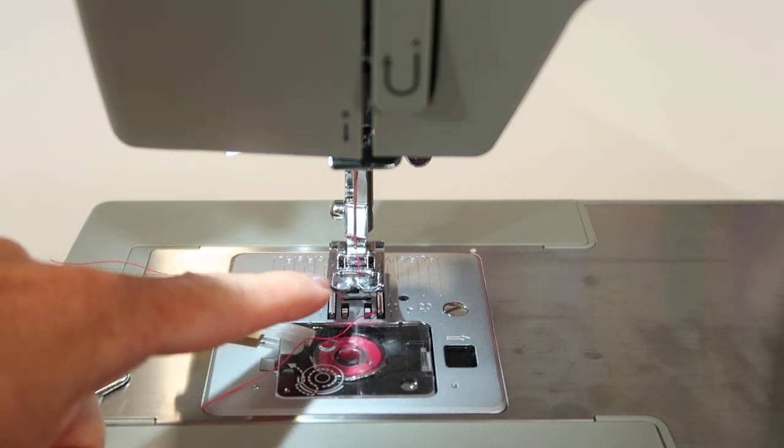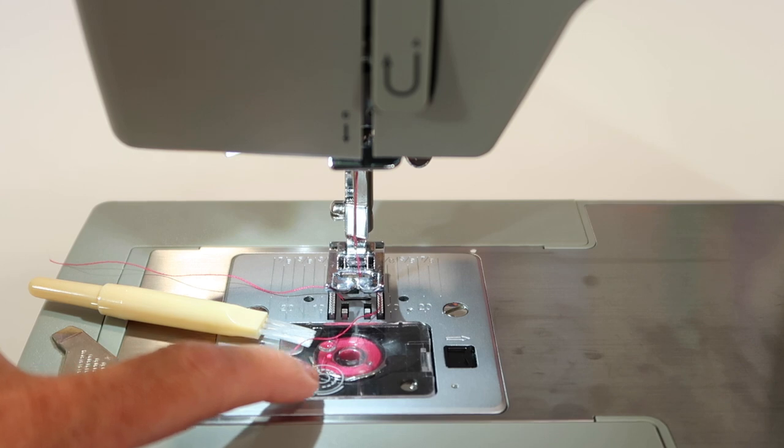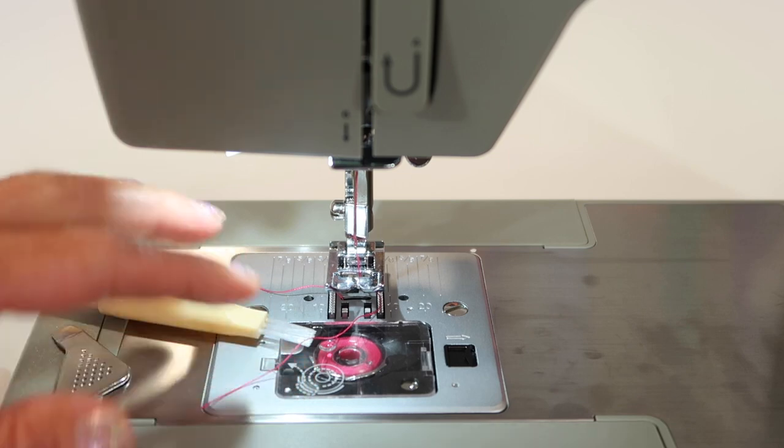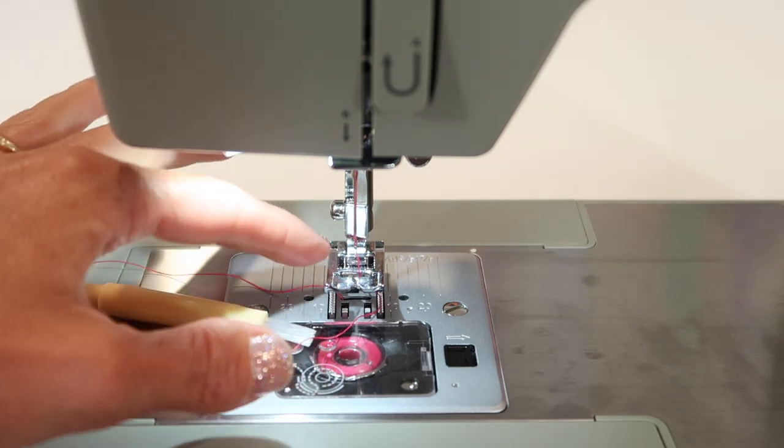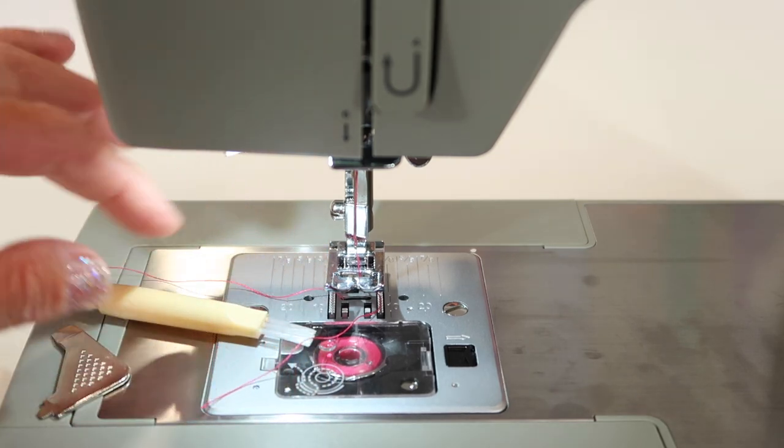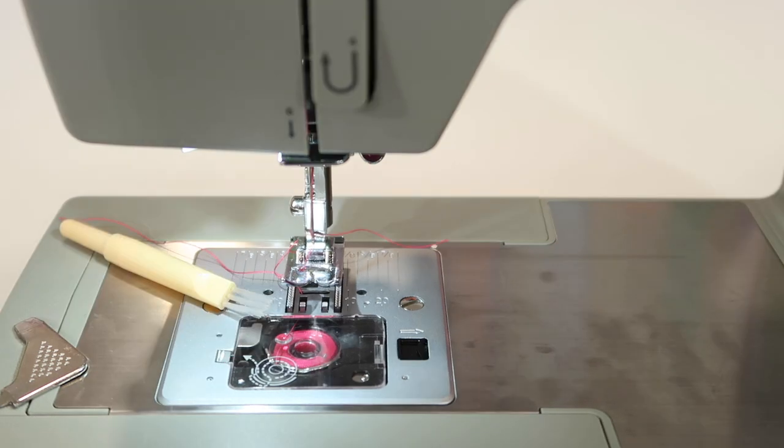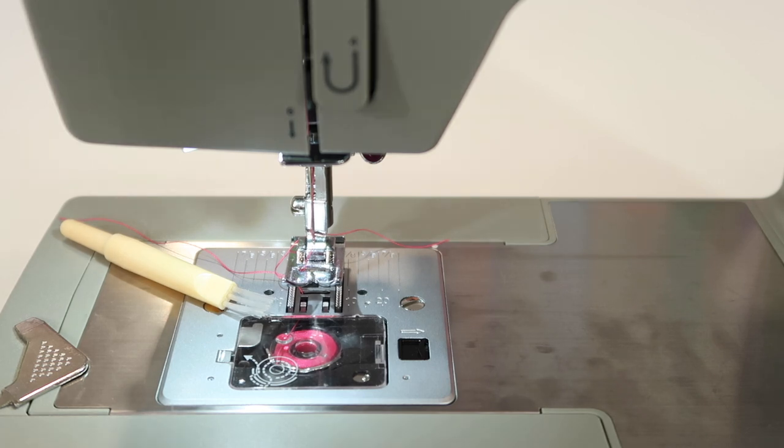If you're noticing some skipped stitches, a machine that's acting a little louder than it used to, as you sew, lint and dust is created and hangs out underneath the throat plate. We're going to walk you through all the steps for cleaning it and even putting a little oil down in the bobbin area.